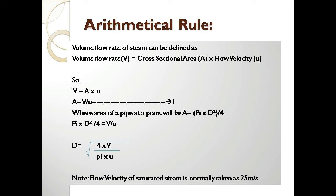We can calculate pipe size by arithmetic rule. Volume flow rate of steam can be defined as: volume flow rate V is equal to the cross-sectional area of the pipe multiplied by flow velocity. Our requirement is to calculate the diameter of the pipe, so we will transform this formula accordingly.